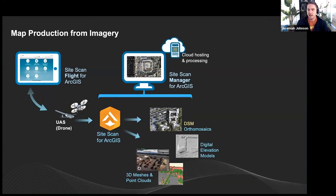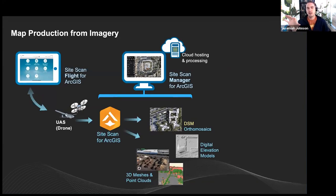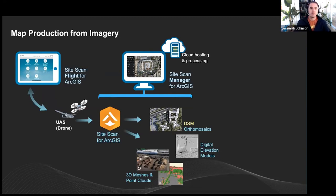Site Scan works in the cloud using Amazon EC2 instances spun up to process data. If you have 50, 500, or 1,000 photos, you upload them to the Site Scan cloud and a processing server is instantiated for that batch. Once processed, it drops into your Site Scan Manager account and you receive an email notification. This is a differentiator from Drone to Map, which processes flights sequentially in a queue. With Site Scan, multiple flights process simultaneously.